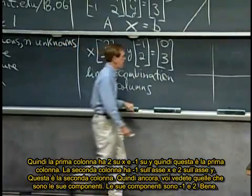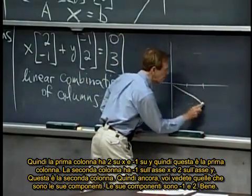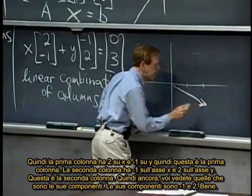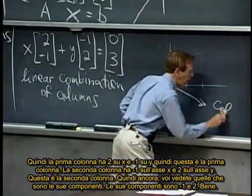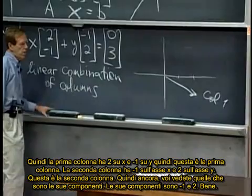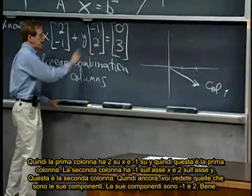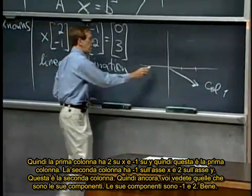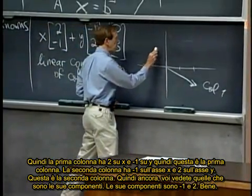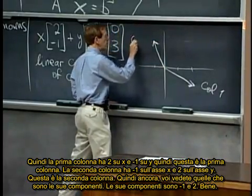So the first column is over two and down one, right? So there's the first column, column one. It's the vector two minus one. The second column is, let's see, I go over minus one is the first component, and up two, it's here. There's column two.